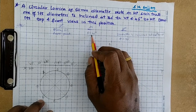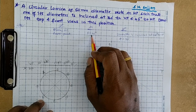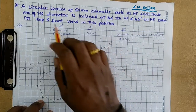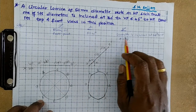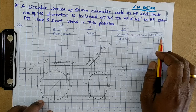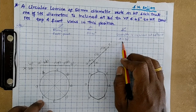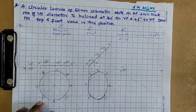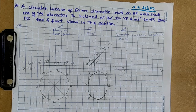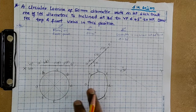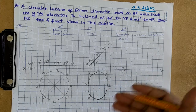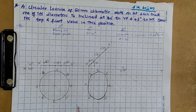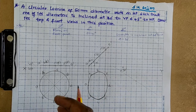For the third position, one of its diameters is inclined at 30 degrees to VP — that is, the diameter is inclined at 30 degrees to VP, so phi is given. These are the details for first, second and third positions. The first and second positions are similar to the previous problem, so just watch that video to know how to draw those two positions.